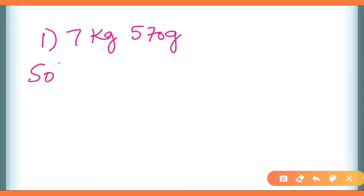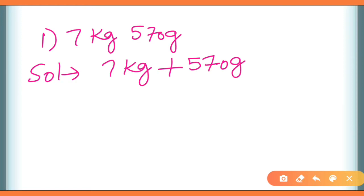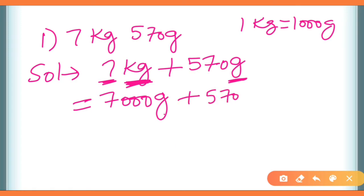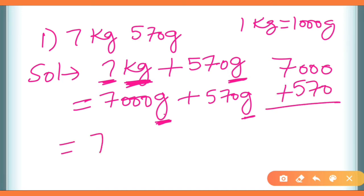Solution में पहली line होगी: 7 kilogram plus 570 grams। लेकिन units different हैं — kilogram और gram — तो हम directly add नहीं कर सकते। 7 kilograms को grams में convert करते हैं: 7,000 grams। अब दोनों gram में हैं, तो 7,000 plus 570 = 7,570 grams। Answer grams में आ गया।